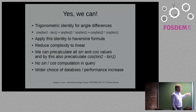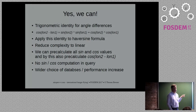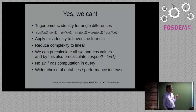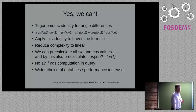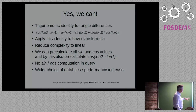The solution uses a trigonometric identity: the cosine of a difference can be evaluated using four other trigonometric values, and those four values — sine and cosine of each individual longitude — can be stored in the table separately. This brings complexity back to linear instead of quadratic. Storing individual sines and cosines per record allows SQLite to handle distance computation without native trig functions, and also offers a performance benefit on databases that do support trig functions.